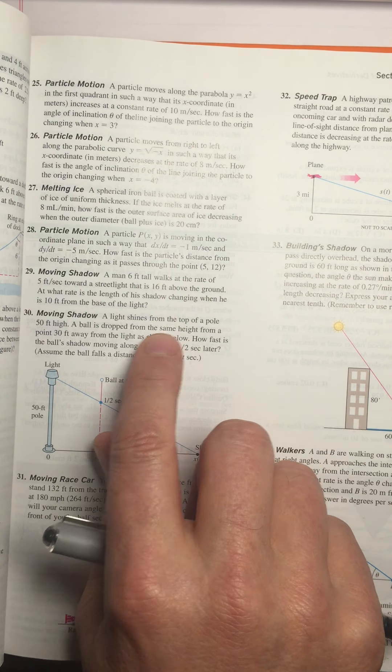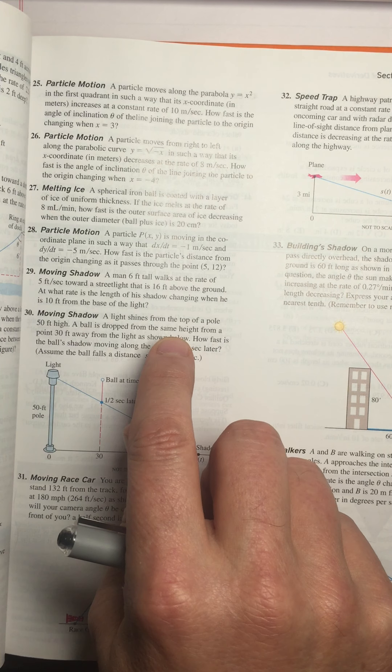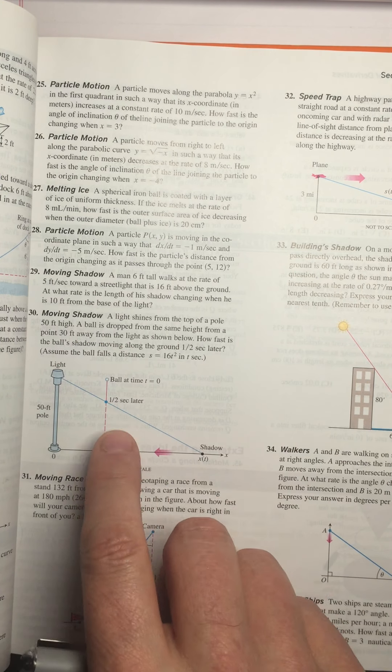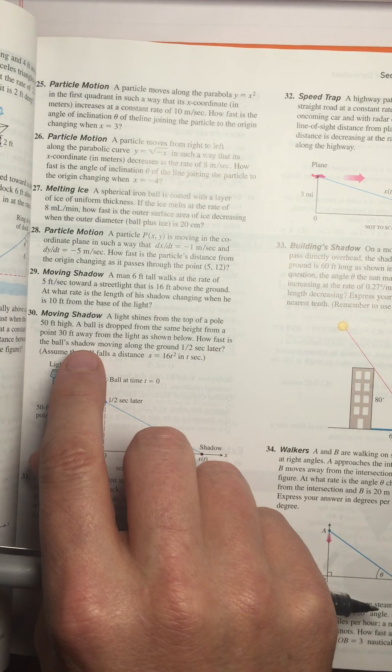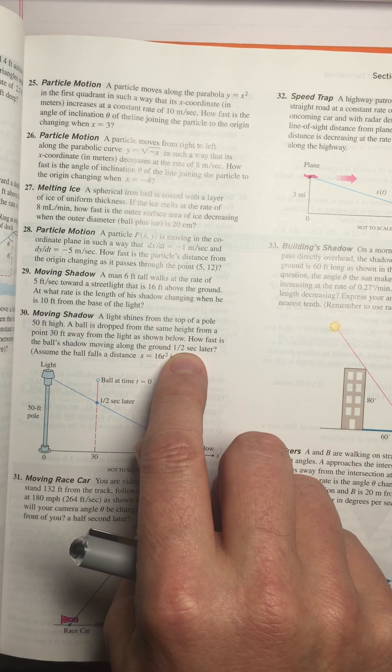Now in this case, the lamp pole is 50 feet high. We're dropping a ball from the same height, but 30 feet away from the light, as shown below. It starts from the same height. How fast is the ball's shadow moving along the ground a half second later?